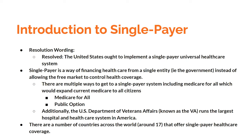Single payer is a way of financing healthcare from a single entity — the government — instead of allowing the free market to control health coverage. Right now in the US, there's a free market relationship to health coverage. People can choose their own type, and there are some government options like the VA system for veterans or Medicare for particular age groups. A single payer system means all financing comes from one entity instead of distinct sources.